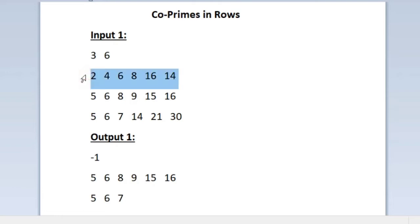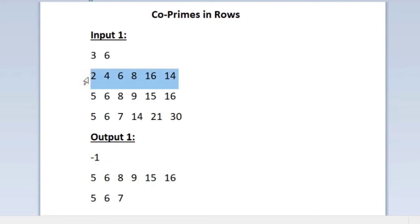If we are not able to find even a single co-prime integer in a row, then for that row we have to print minus 1 as our output. So for the first row we print minus 1. This is what we should be doing for every row of the given input.